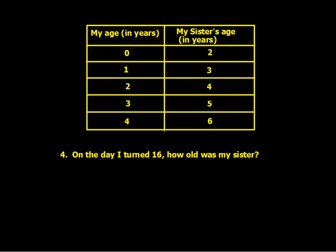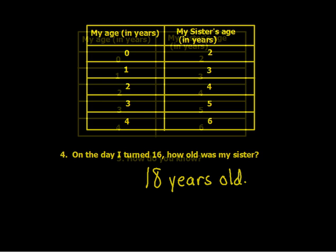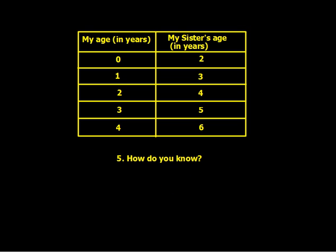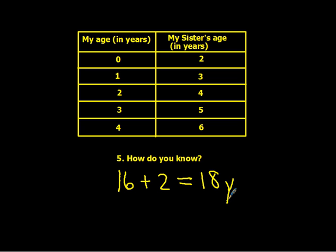On the day that I turned 16, how old was my sister? If my age is 16 and my sister is two years older, that makes my sister 18 years old.